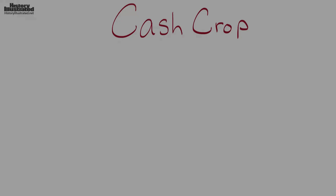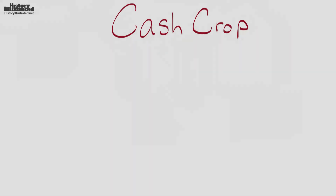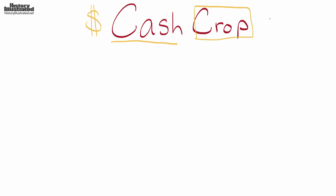In this History Illustrated video, we're going to take a look at the vocabulary word 'cash crop.' The first word, cash, is talking about money, and the second word, crop, has to do with farming — something that you grow. So if you break the word down, you have farming for money.